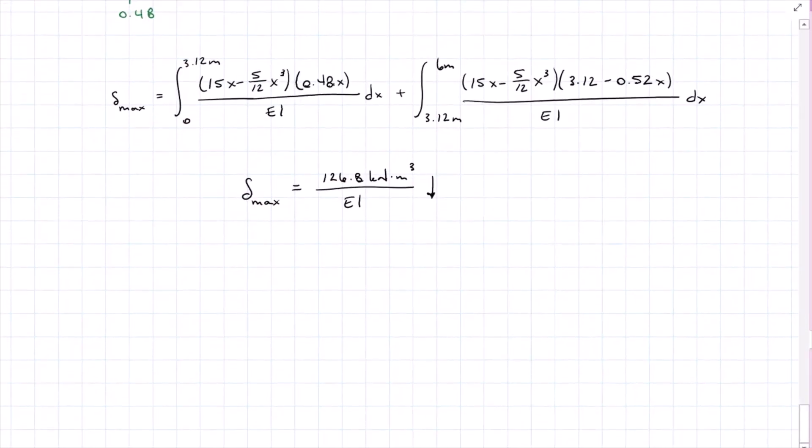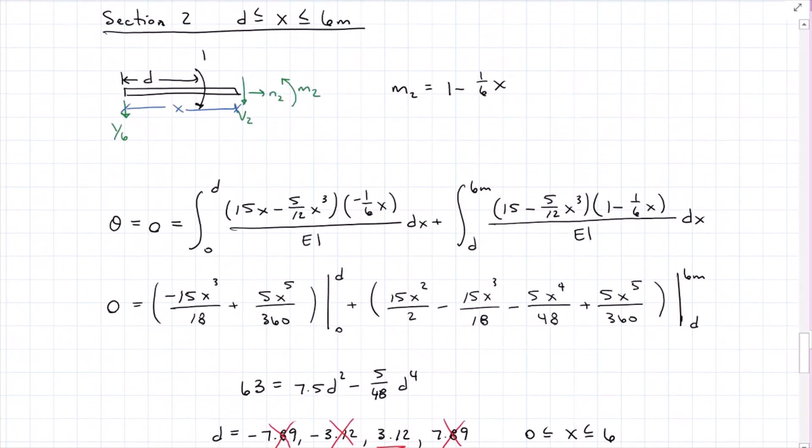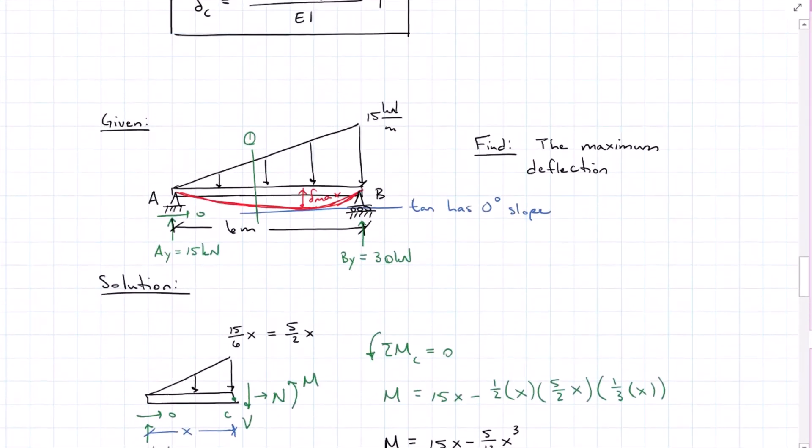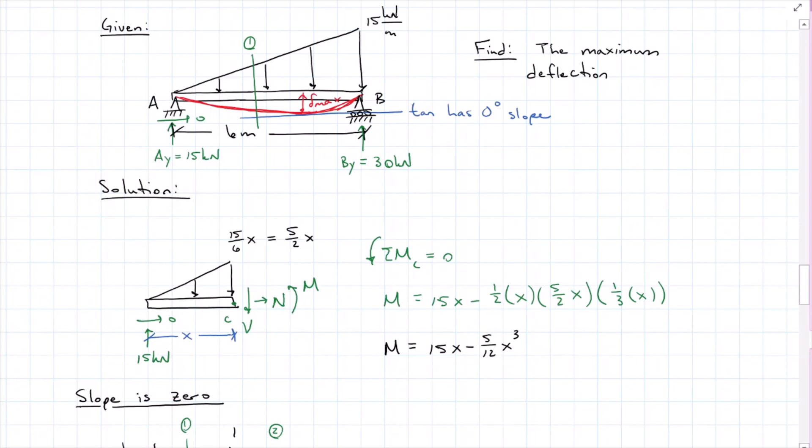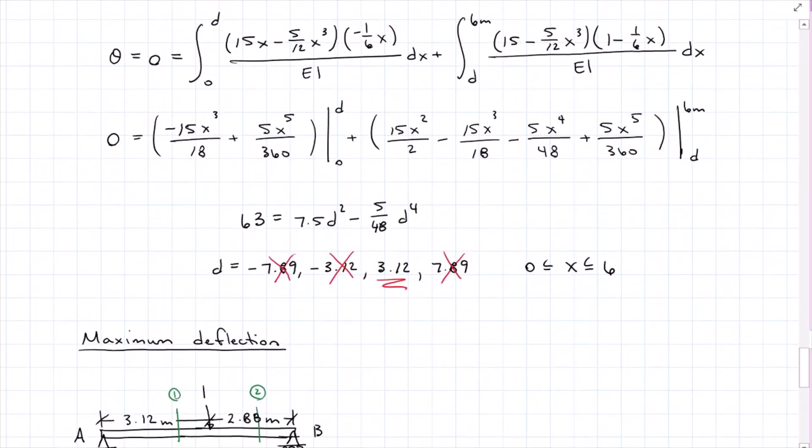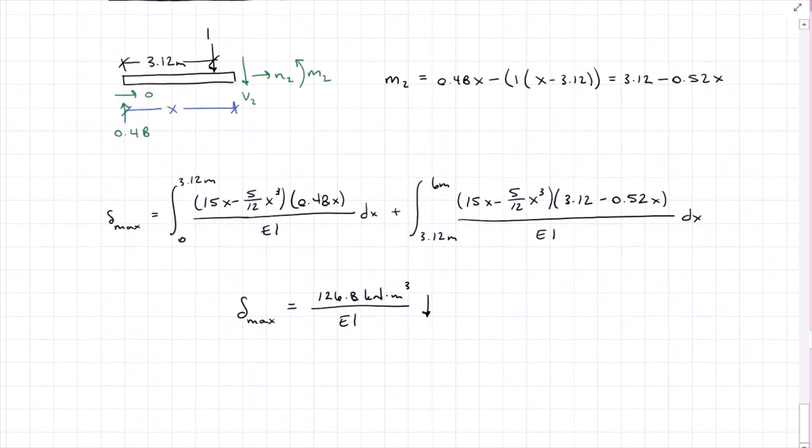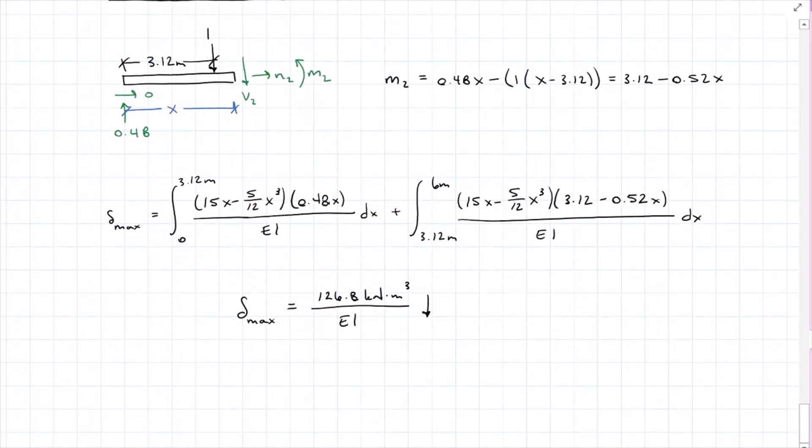By the way, I had some of you ask about the Hibbler's Mechanics of Materials book, Appendix C, where slopes and deflections are already solved for simply supported beams and cantilevers, and you will find that our simply supported beam with a triangular load is in that appendix, and it does give the location and equation for the maximum deflection, and by the way, it works out to be 3.12 and 126.8 kilonewton meters cubed. So yay, we match the appendix.